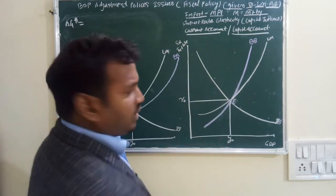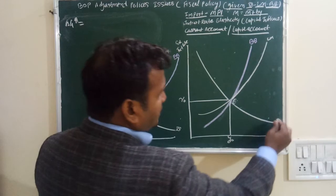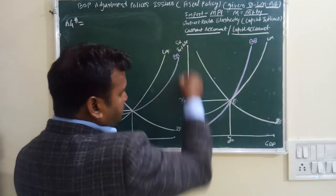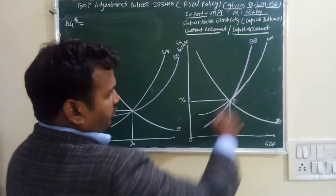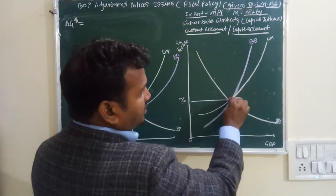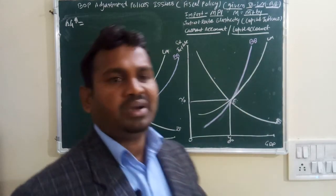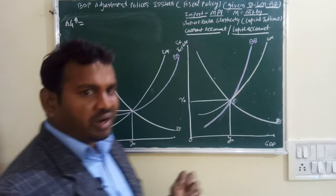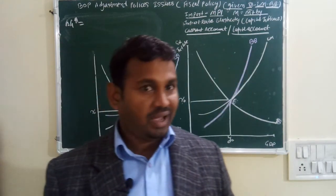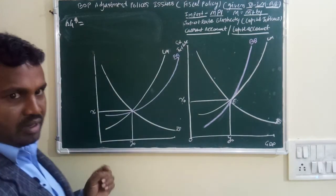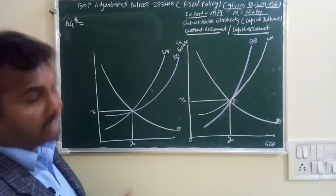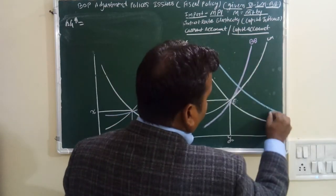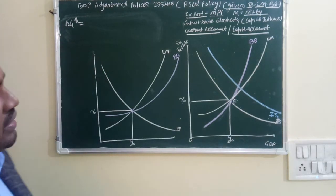In the first situation, the previous IS and LM are given, where Y is GDP, R is the interest rate, and exchange rate is also considered. The equilibrium point is point E, where the goods market and money market are in equilibrium, and the foreign market and Balance of Payment are also in equilibrium with no depreciation. If the government changes fiscal policy and increases government expenditure, the IS curve shifts to the right — a new IS is formed on the right-hand side.